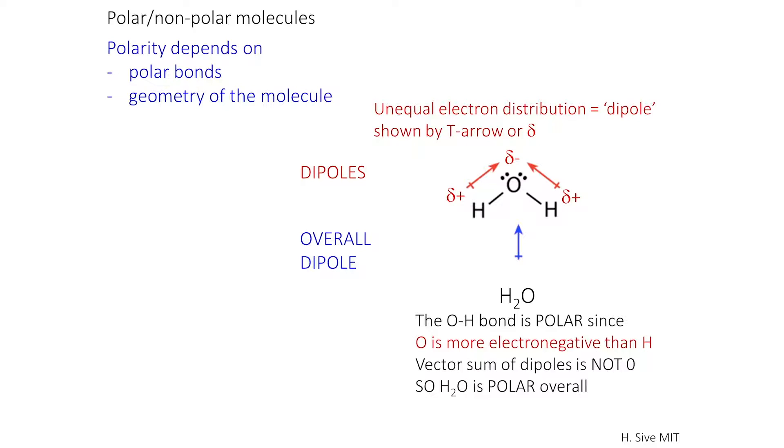And this is indicated by those deltas. Delta minus means that the atom is more negative than an atom that's indicated delta plus. So delta negative is the oxygen, delta plus is the hydrogen.